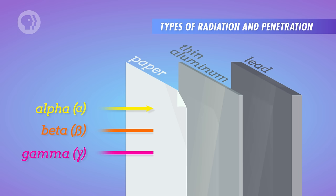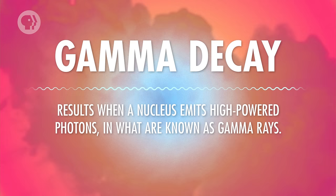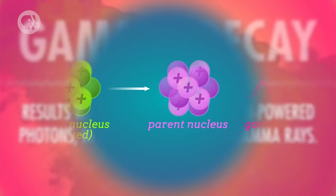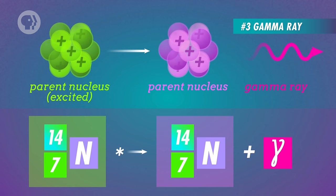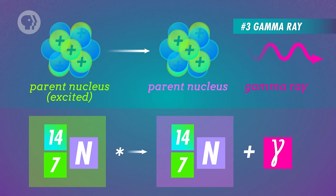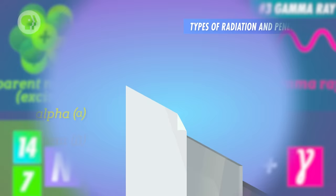As for their penetrating power, beta particles are typically stopped by a few millimeters of aluminum. The third kind of decay is gamma decay, which is what results when a nucleus emits high-powered photons in what are known as gamma rays. This kind of decay usually occurs when a nucleus is in an excited state, which can happen because the nucleus is decaying from a larger form, or because it collided with a high-energy particle, among other reasons. When a nucleus is excited, it wants to transition into a lower-energy state, which it can do by releasing a photon. Unlike alpha and beta decay, no transmutation occurs in gamma decay. Instead, the excited nucleus just decays into a ground-state nucleus and a gamma ray. Gamma rays have the highest penetrating power, requiring a large amount of concrete or lead to stop their propagation.